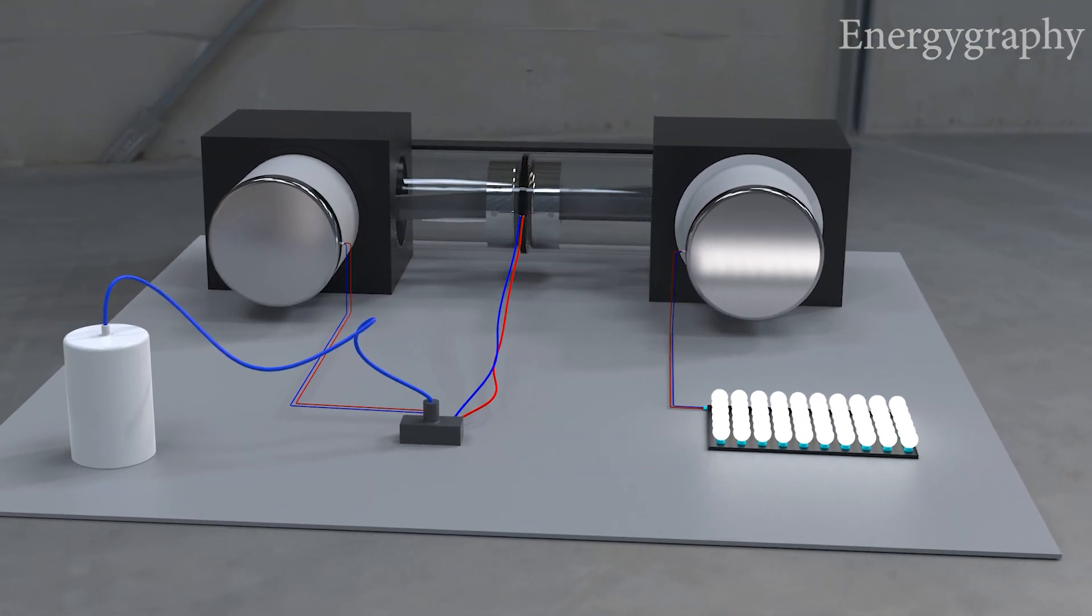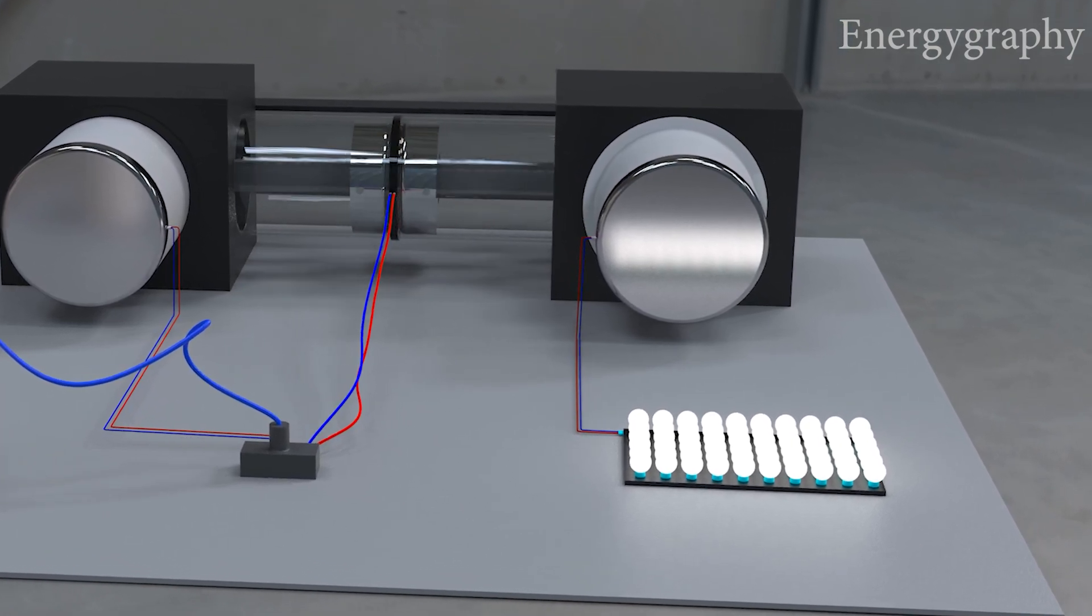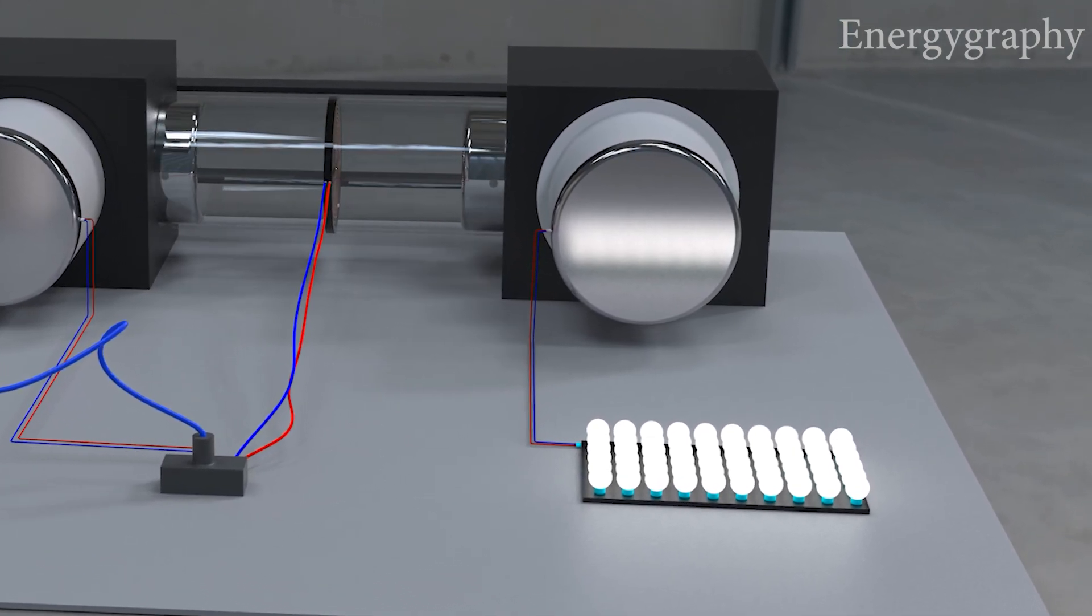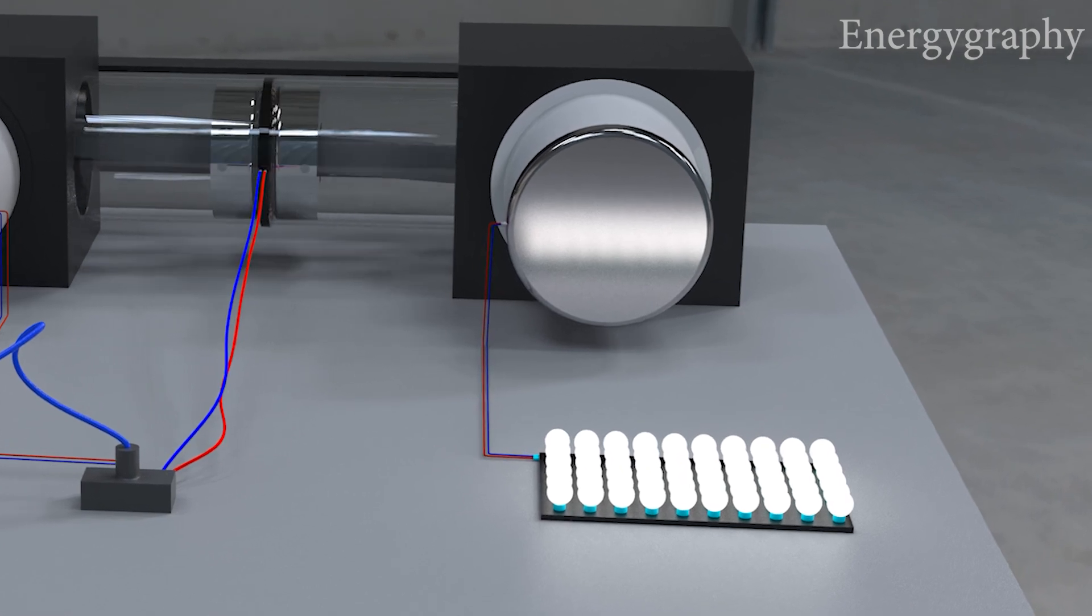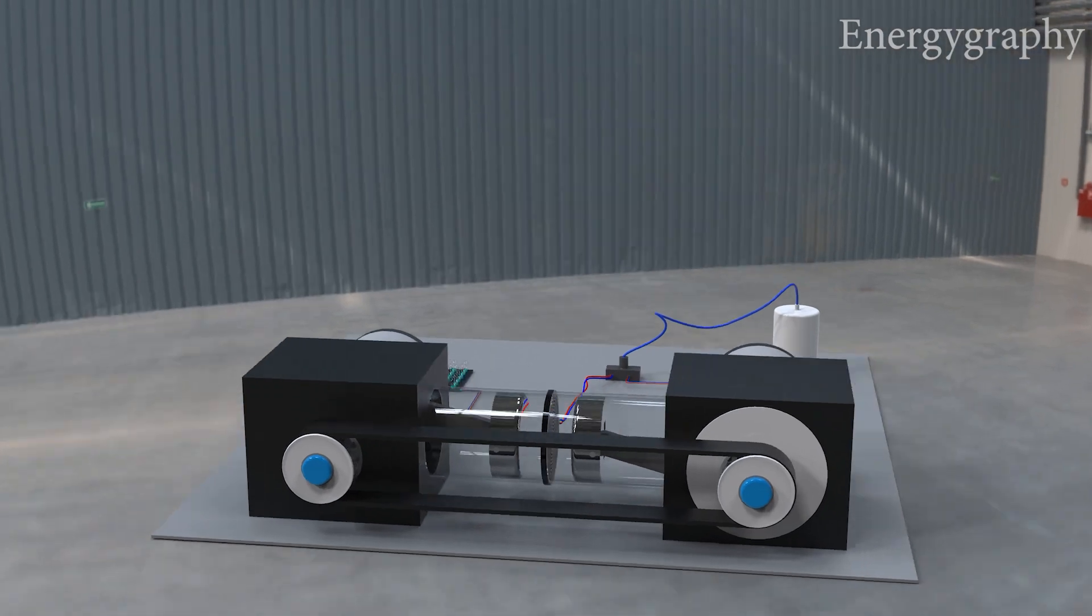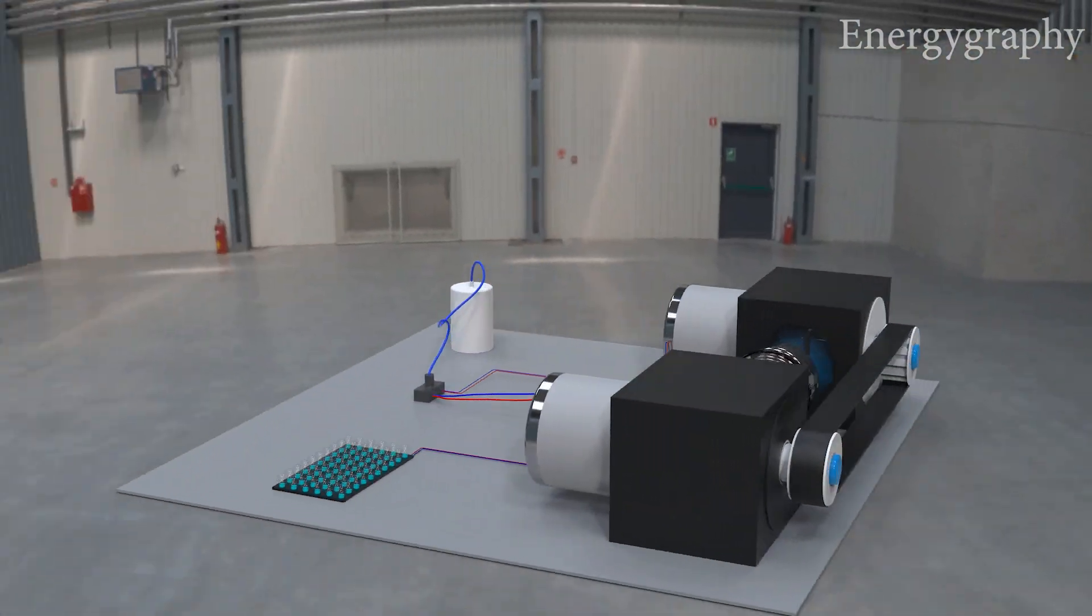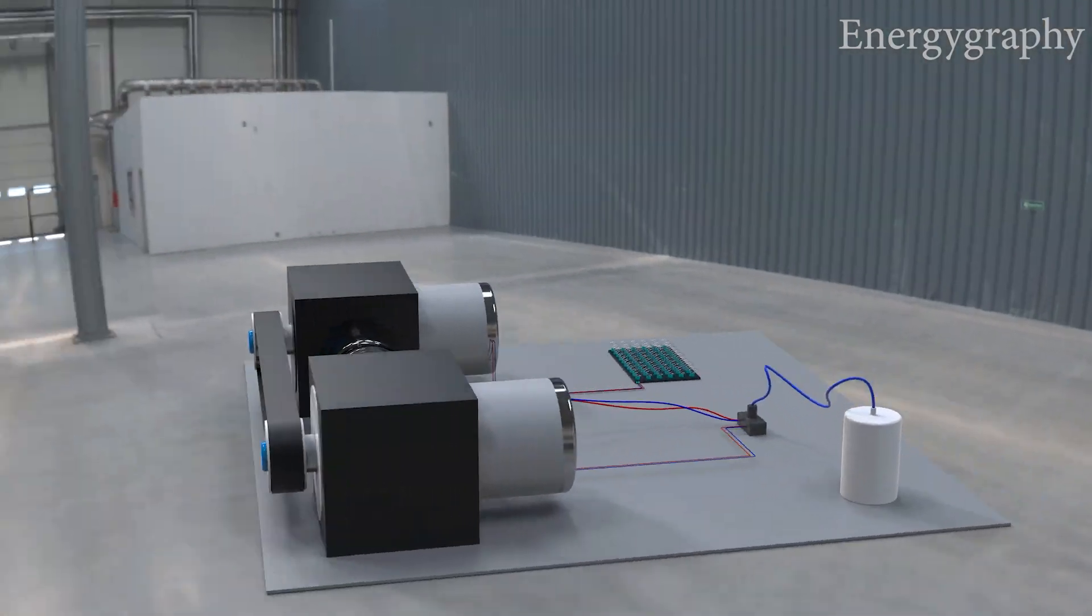One of the key advantages of the permanent magnet generator is that it is completely self-sustaining. Because it doesn't rely on external fuel sources to generate power, it can run indefinitely as long as the magnets remain intact. This means that once a permanent magnet generator is installed, it can provide free energy for years to come.